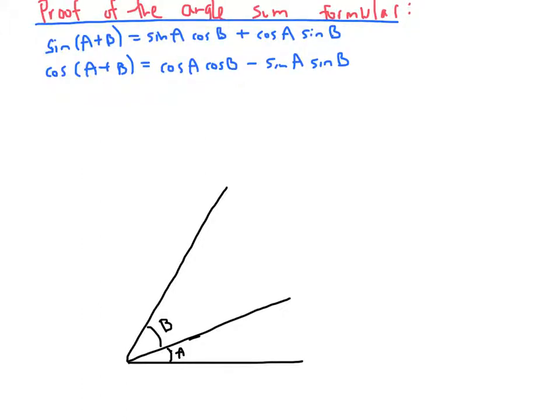Next, I'm going to draw a line perpendicular to this middle line. And I'm going to extend the top line until it meets that perpendicular, making a right triangle.